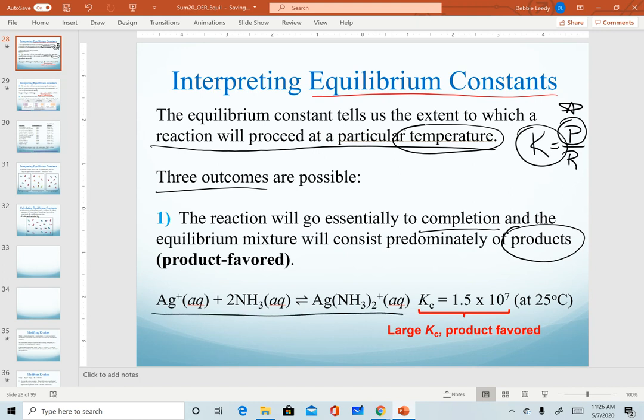So one example of a reaction that is considered product favored is this one, the reaction of a silver ion with two ammonia molecules. This forms a new kind of substance called a complex ion. We won't study it in detail this semester, but it is a transition metal bonded to a small molecular ion. So notice it's still an ion overall. When we measure or calculate our Kc value, notice that we have an exponent of 10 to the 7th. That is a very large K value that tells us that this system is product favored at equilibrium. Meaning once this system no longer changes values, the molarities don't change anymore, I have a lot more of my products in the system.